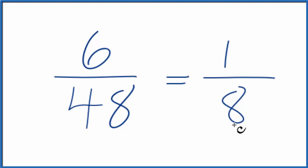So if you don't know that, here's what you could do. You could divide the top and bottom by two. Six divided by two is three. Forty-eight divided by two is twenty-four.